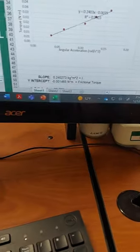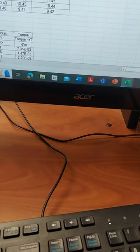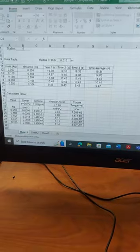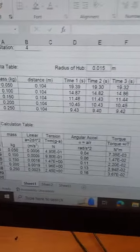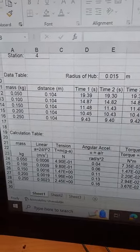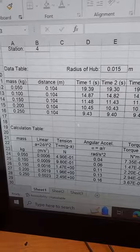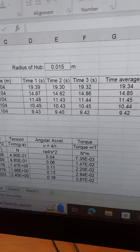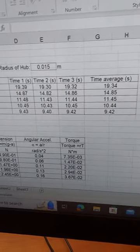And this is what the final product should look like. So here you have the height from the floor to the top of your pulley and the times recorded for the different masses.